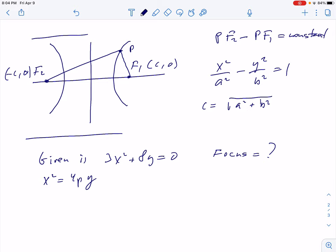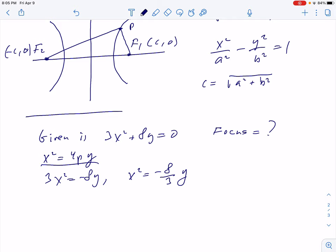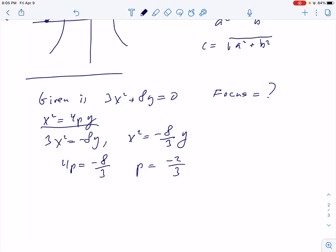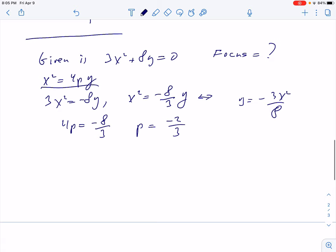And solve for x squared in the given equation. We have 3x squared equals negative 8y, x squared equals negative 8 thirds y. And now, comparing to the standard equation, we have 4p equals negative 8 thirds, p equals negative 2 thirds. The parabola that we have here opens down. You can write the same equation: y equals negative 3x squared over 8. So it opens down like that.